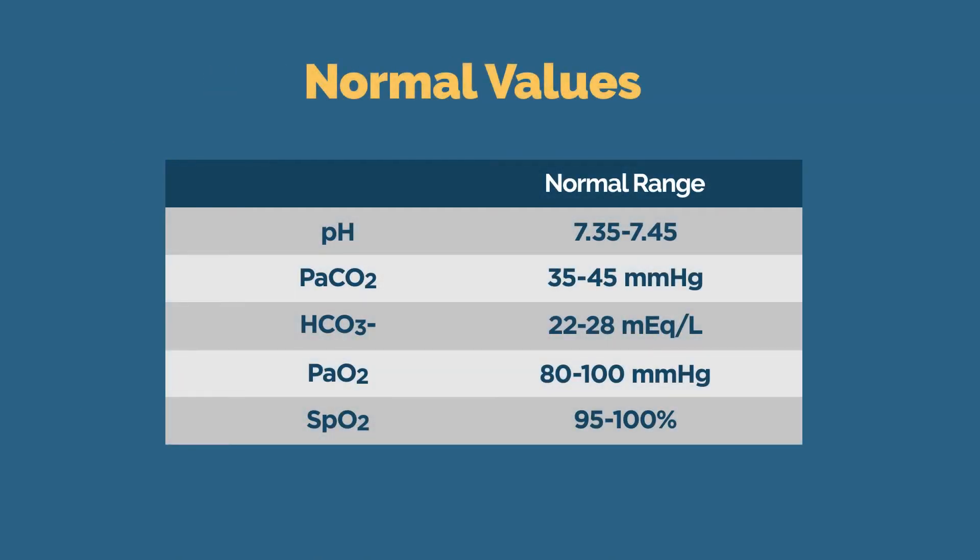Before we run through each of the six steps in our ABG analysis, it's important to recognize that in order to identify abnormal levels, you need to know your normal values first. The normal range for pH is 7.35 to 7.45. The normal range for partial pressure of carbon dioxide is 35 to 45. The normal range for bicarbonate is 22 to 28. Normal range for partial pressure of oxygen is 80 to 100, and normal levels for oxygen saturation as measured using a pulse oximeter is 95 to 100.